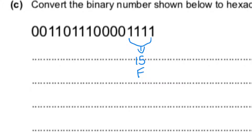So the answer to that nibble would be F. For the next four bits, it's 0, 0, 0, 0, which would be 0. And in hexadecimal that would be known as 0 — exactly right, not a trick question. And then for the next nibble over here, it's 1, 4, 1, 2, and 1 — 1, which would be 7. Exactly right. And in hexadecimal we would call that 7.